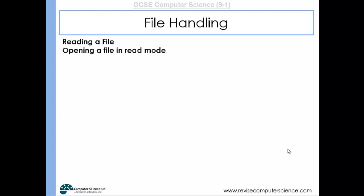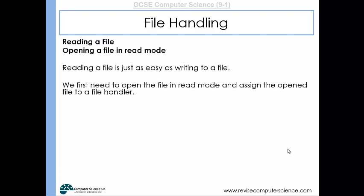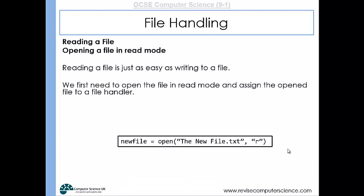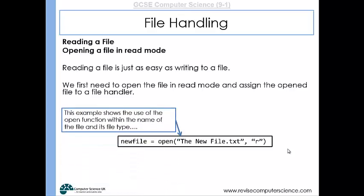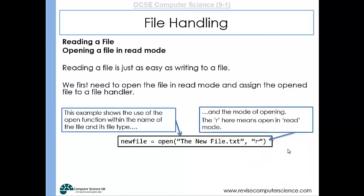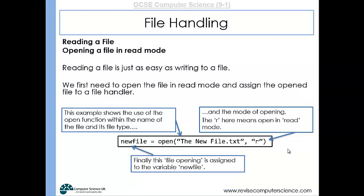Now that is an example of writing to a file. Now let's have a look at examples of reading a file. First, we need to open the file, but this time we are going to open it in read mode. We've got an example of using the open function with the name of the file and its file type, and we are opening it up in read mode. Here we are assigning that to a file handler called newfile.